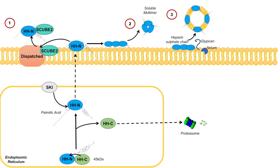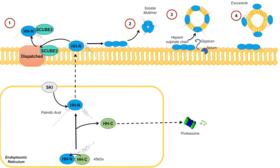The fourth way is again similar, in that the hedgehog proteins accumulate within the plasma membrane. But this time the plasma membrane itself can actually bud off from the cell as an exovesicle. This is the fourth way that hedgehog proteins can be released from the cell. We mentioned that there are four mechanisms, and those are the four mechanisms of release of hedgehog proteins.